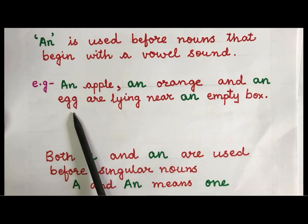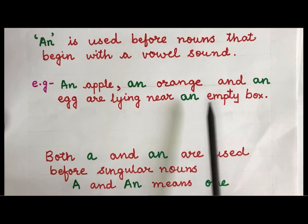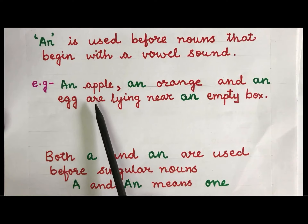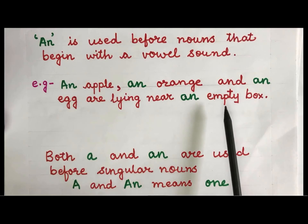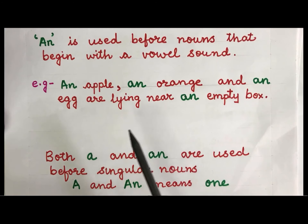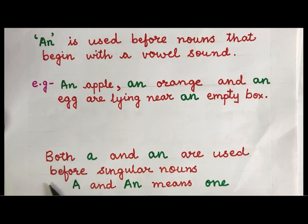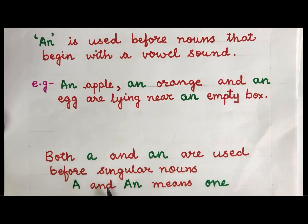Let us see an example: an apple, an orange, and an egg are lying near an empty box. Now in this sentence apple, orange, egg, and empty are beginning with the vowel sound, so we have used the article an here. Both a and an are used before singular nouns. A and an means one, so children always remember this.